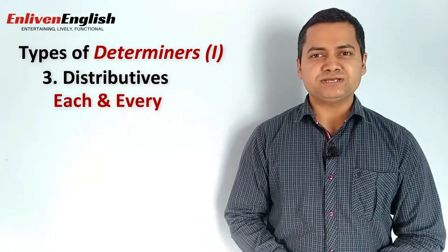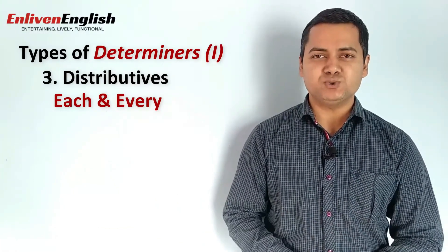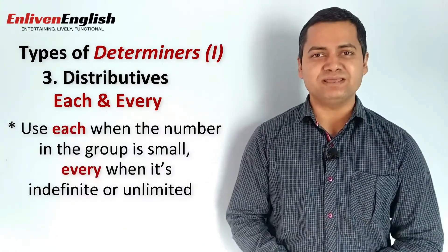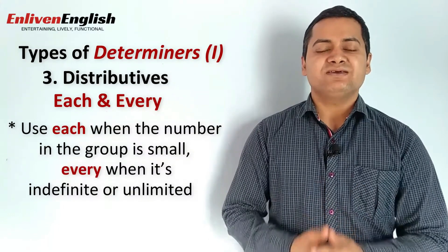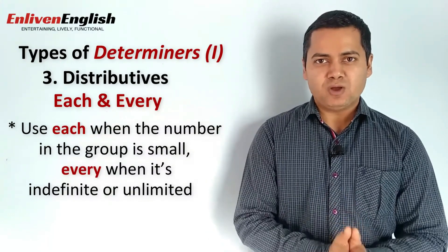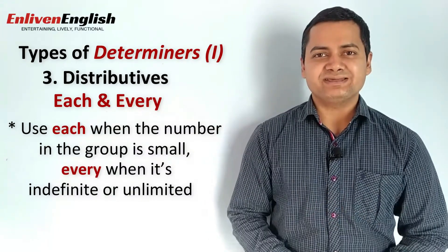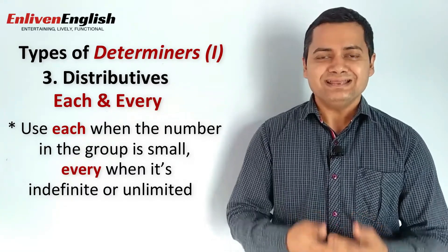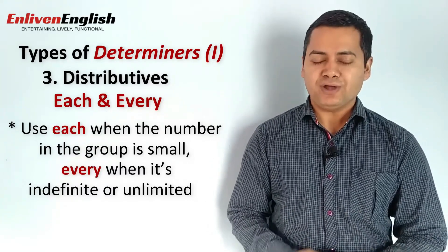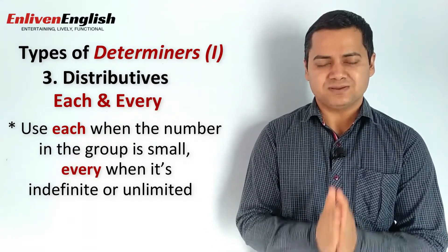There are certain situations where we should avoid using the two interchangeably. We should use 'each' when the number in the group is small, limited, or definite, and 'every' when it's indefinite or unlimited. Let's understand this with the help of some examples.